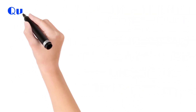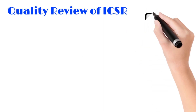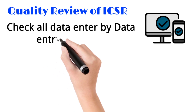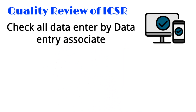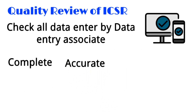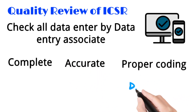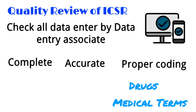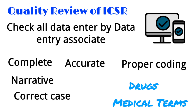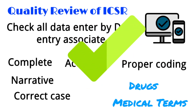The third step in case processing is quality review of individual case safety reports. In this step, the associate will thoroughly check the quality of all data entered by the data entry associate, verifying whether data is complete and accurate, whether proper coding of drugs and medical terms using the appropriate dictionary was performed, and checking the narrative. The associate corrects the case as needed. The responsibility of the quality reviewer is to give a green flag to all data entered by the data entry associate, and can raise queries if any.